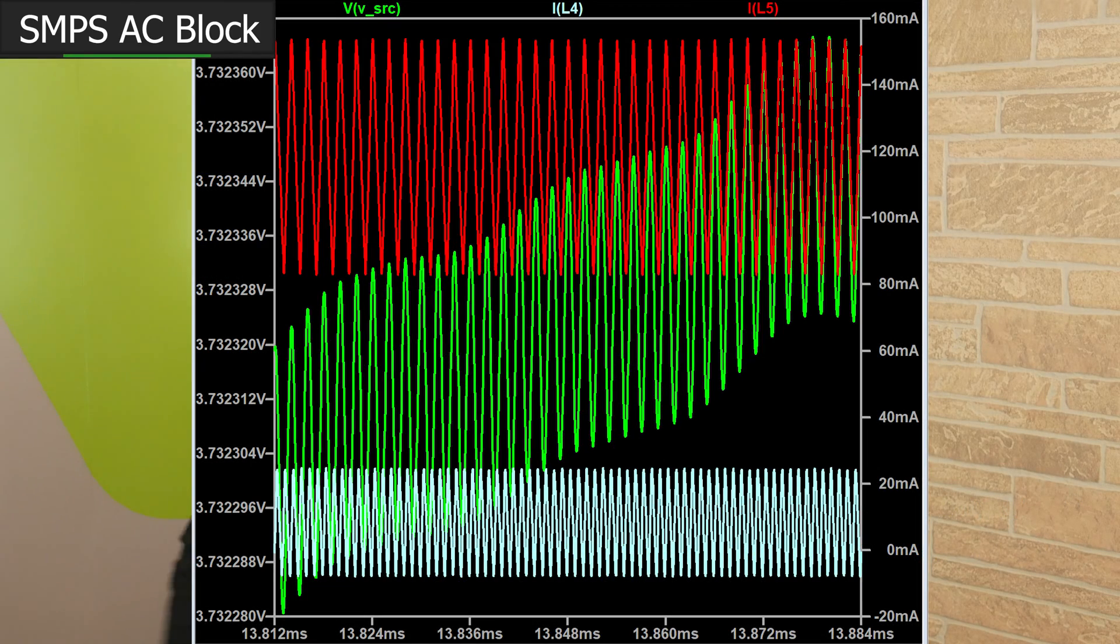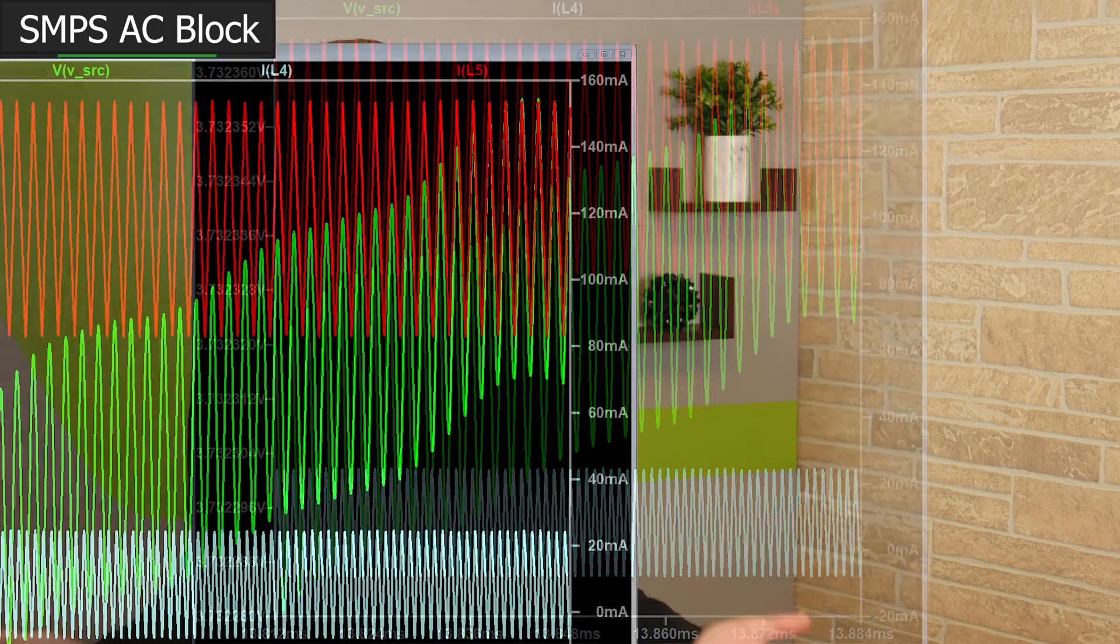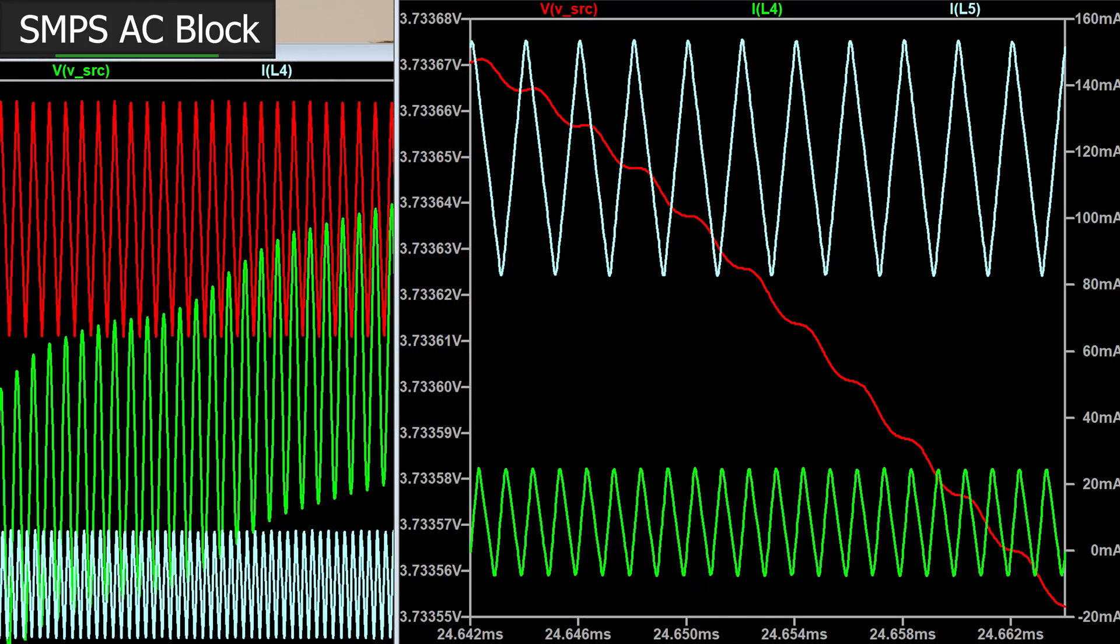In contrast, let's connect these supplies through a ferrite bead. Well, I think it's pretty immediately obvious to see that the voltage ripple on the supply feeding these two power supplies has been significantly reduced. And therefore, we've probably reduced the probability that these two supplies will interfere with one another or other loads sourced from this rail.